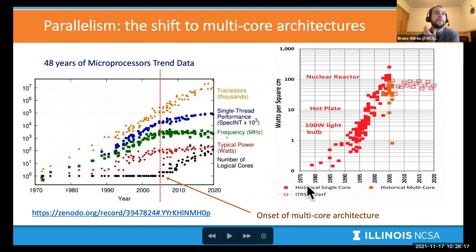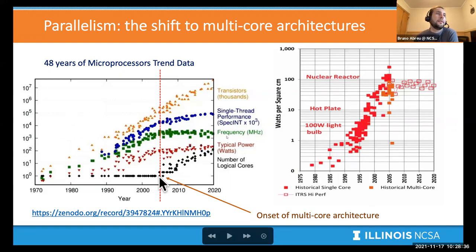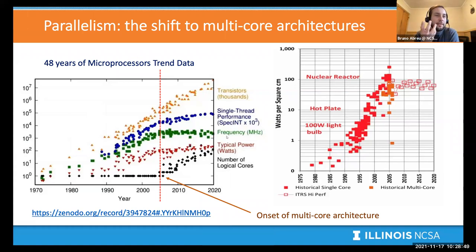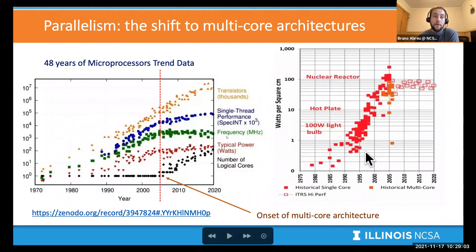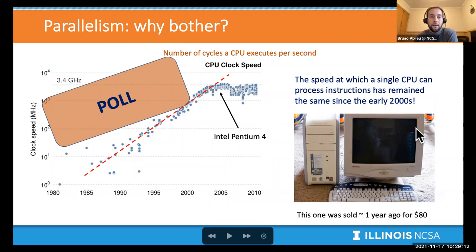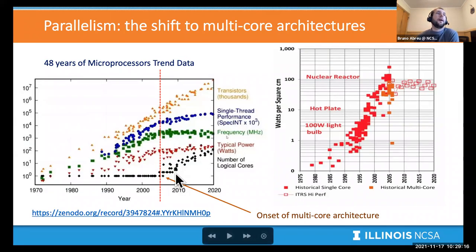You can't make processors faster anymore because they just melt. The solution to keep delivering more processing power is moving to a multi-core architecture — instead of one single processor per chip, you have several, and you learn to distribute your computational workload across them. The onset of multi-core systems was in the early 2000s. If you're running a serial application without benefiting from parallelism, you're stuck at the same clock speed as an $80 processor. That's why it's so important to understand parallel computing.